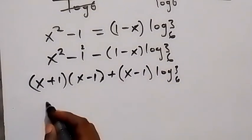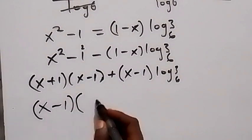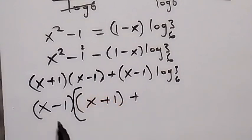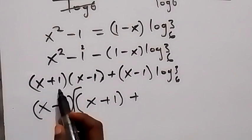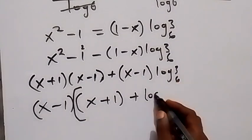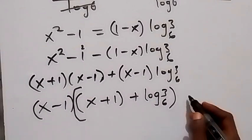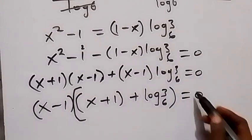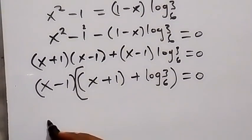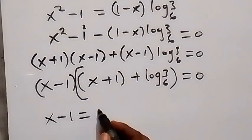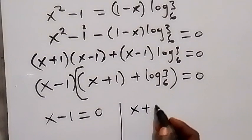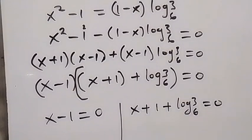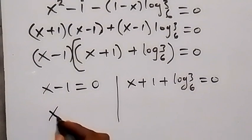We take x minus 1 as a common factor. Factoring out x minus 1, what remains in the bracket is x plus 1 plus log 3 base 6. Setting each factor to zero: x minus 1 equals 0 gives x equals 1, and x plus 1 plus log 3 base 6 equals 0.